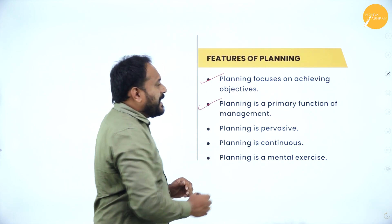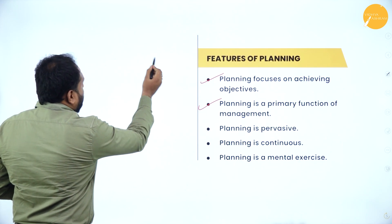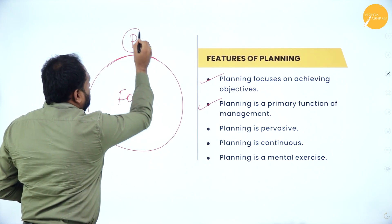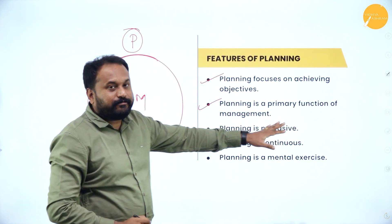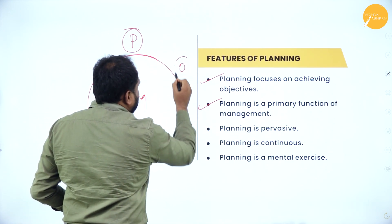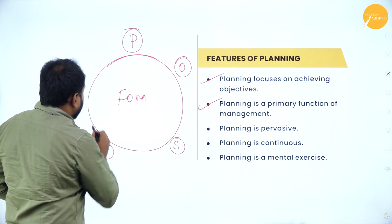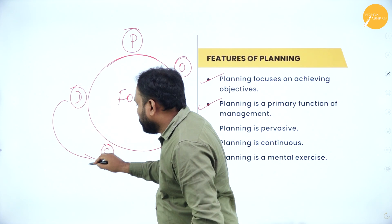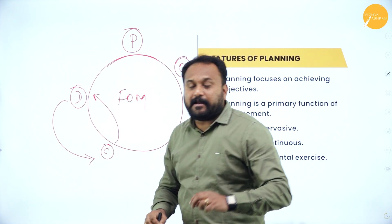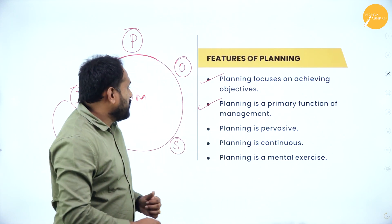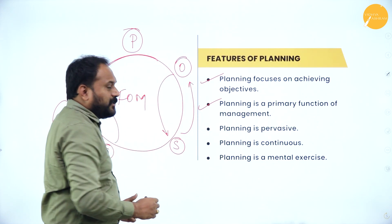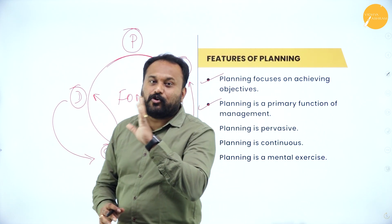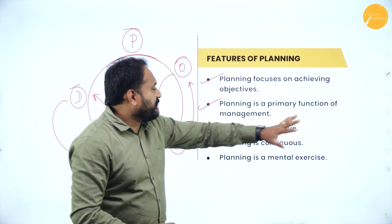The second feature is planning is the primary function of management. The functions of management are: planning, organizing, staffing, directing, and controlling. Planning is the first function, so that is why it is a primary function of management. Directing comes before controlling, and controlling goes after directing — it can be in any order. Organizing can come before staffing or staffing before organizing — no issues. But the primary aspect is planning only, that is why planning is the primary function of management.